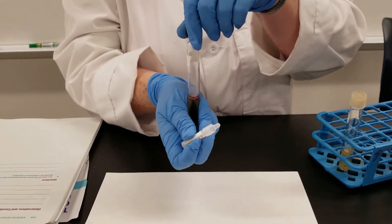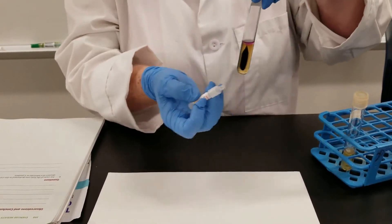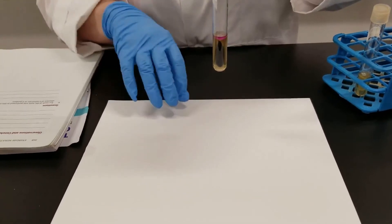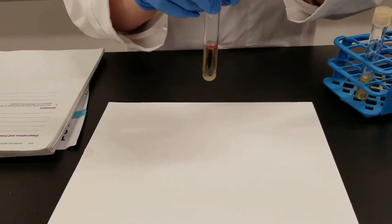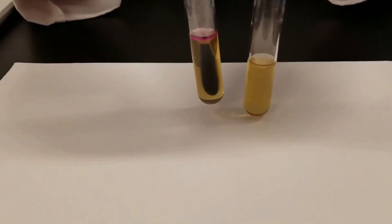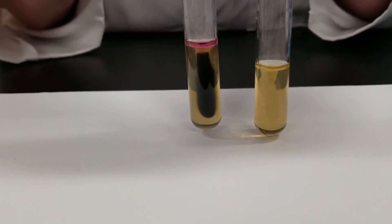And then we will look for color change. As you can already see on this one, it is turning red. That would be a positive for indole. This one has remained kind of that yellowish color, but definitely not red, so it would be a negative.